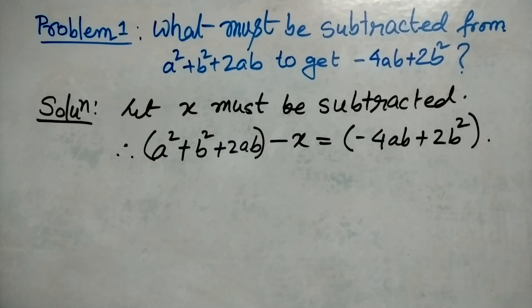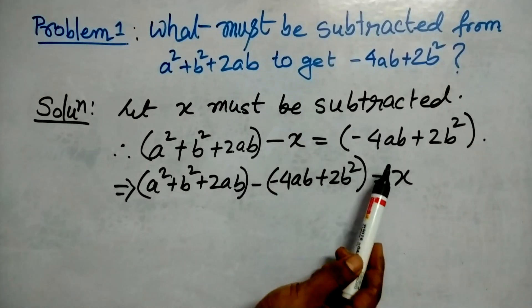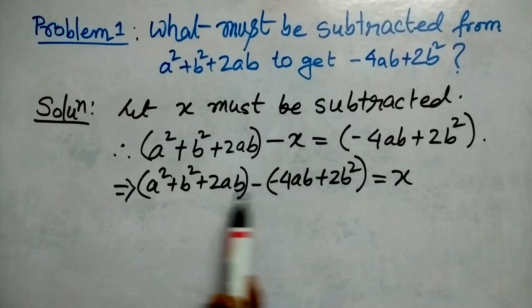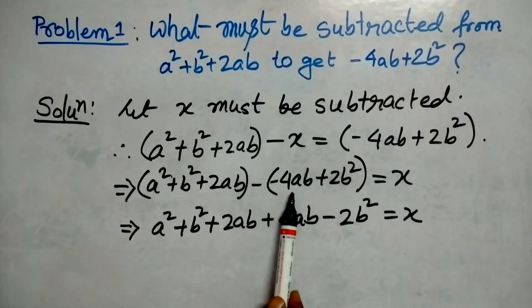If we take x to the right side and this polynomial to the left side, x equals this minus this. Here we have opened this bracket and changed the sign of each term in the bracket.